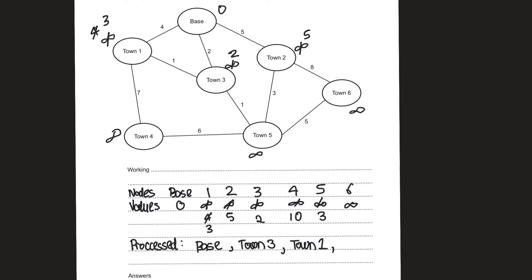Town five is directly connected to town four, three, two, and six. If we go to town four via town five, that would be three plus six equals nine. The current value for town four is ten, so the more practical approach is going from town five — a new lower value of nine, so let's update that. If we go to town six via town five, that would be five plus three equals eight — let's update this value as well.